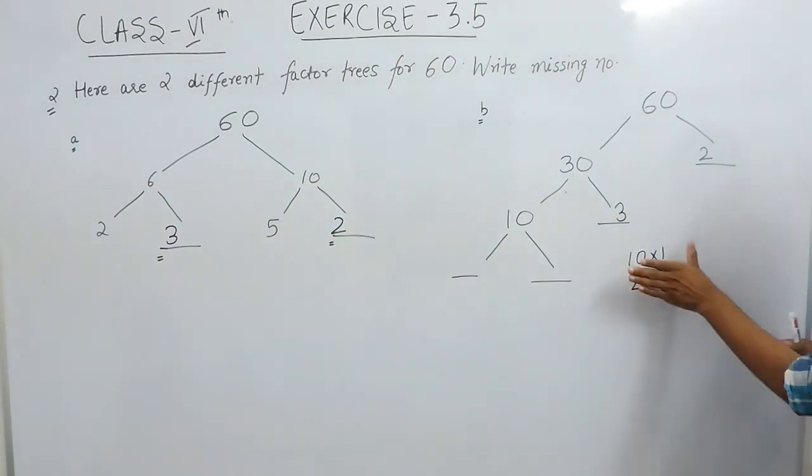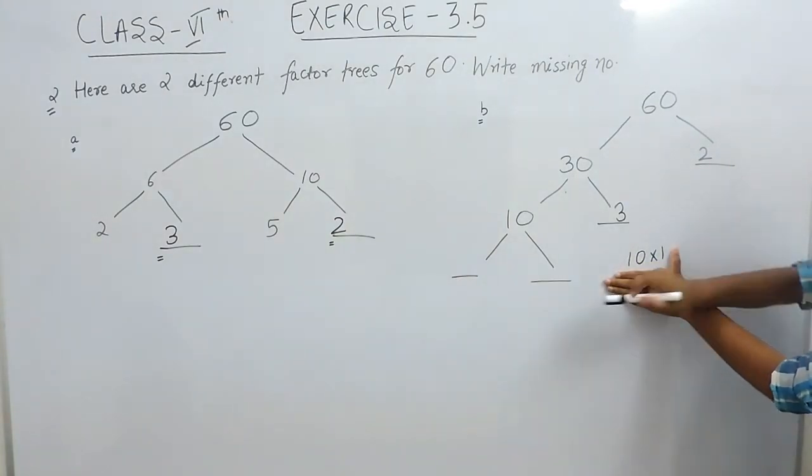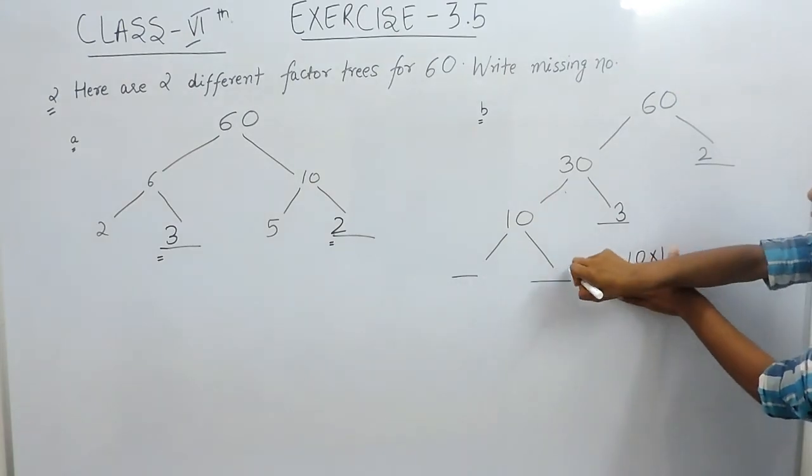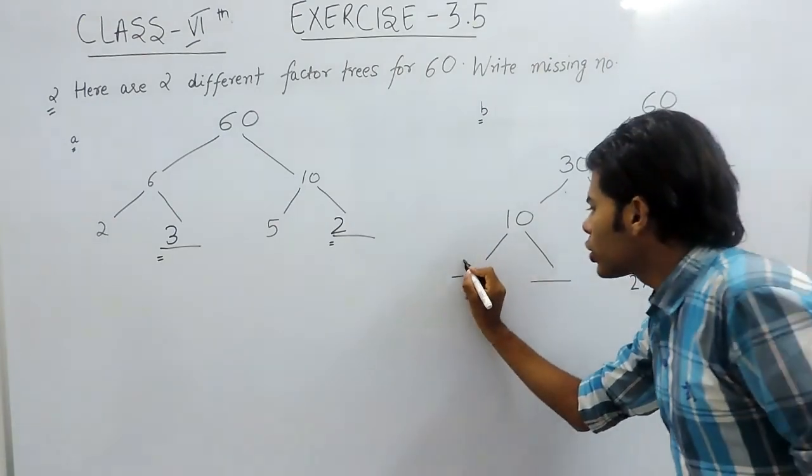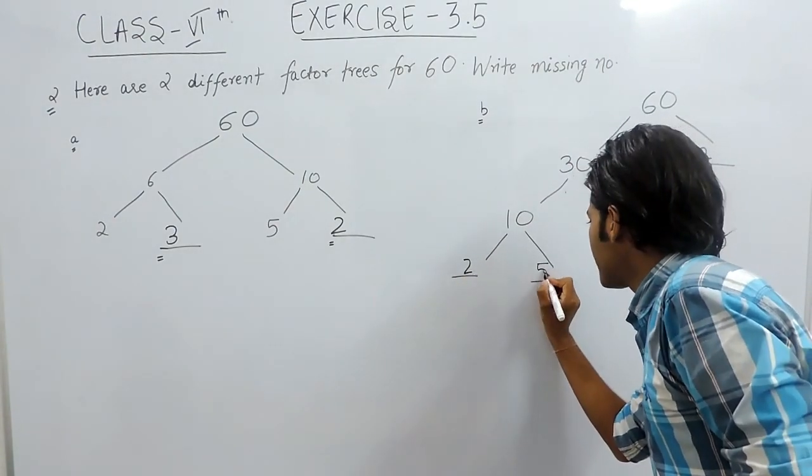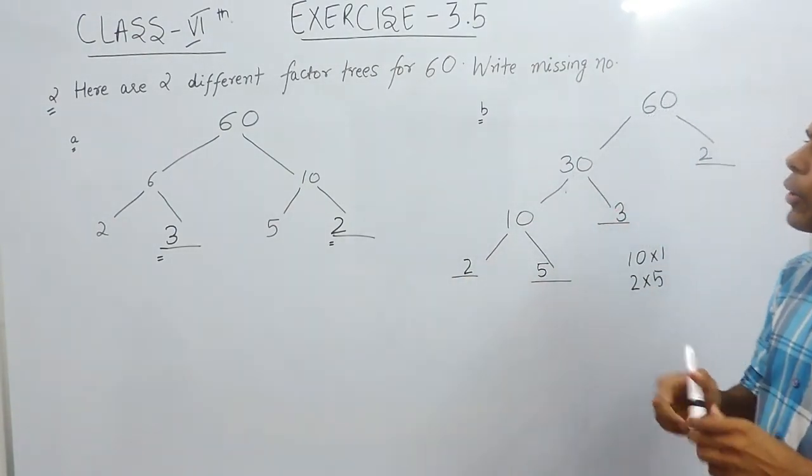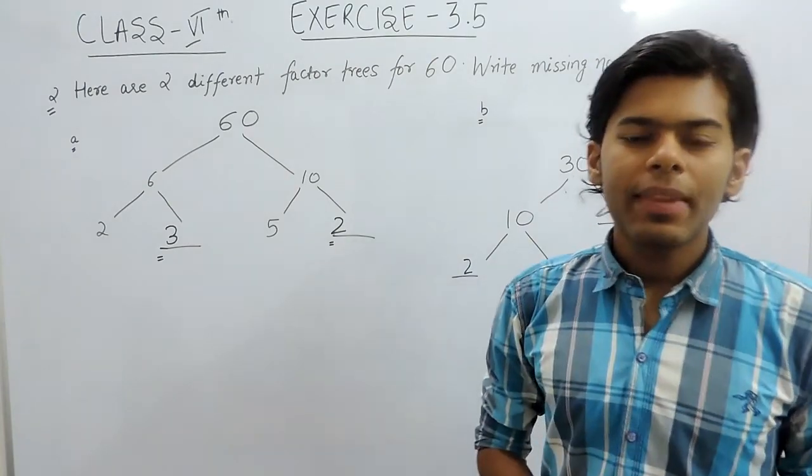So first priority will be 2 and 5. But if this option is absent, then the answer would be 10 multiplied with 1. But as 2×5 is present, we will write 2 and 5. So this is how you can solve this question. Thank you.